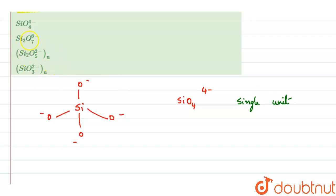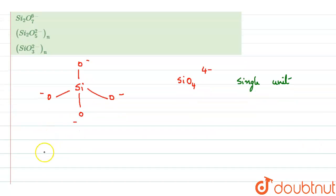We'll see the second one. In second one, we have Si2O7^6-. The structure is called pyrosilicate. The second structure is called pyrosilicate.